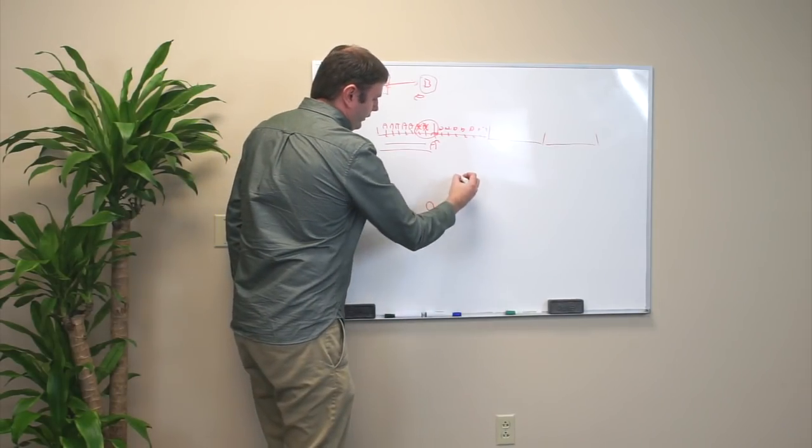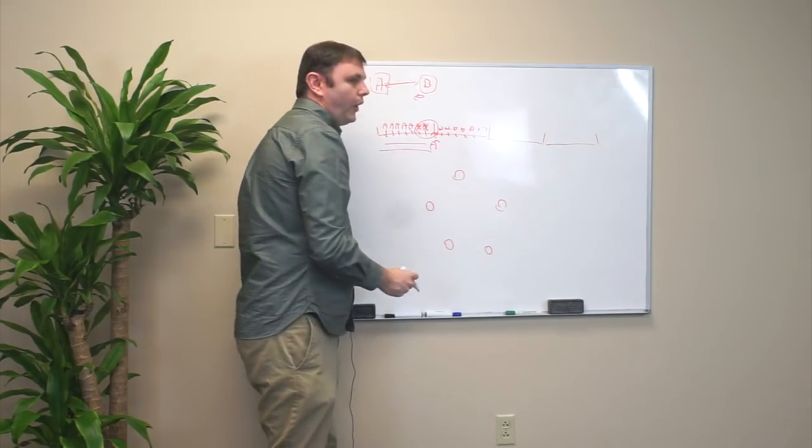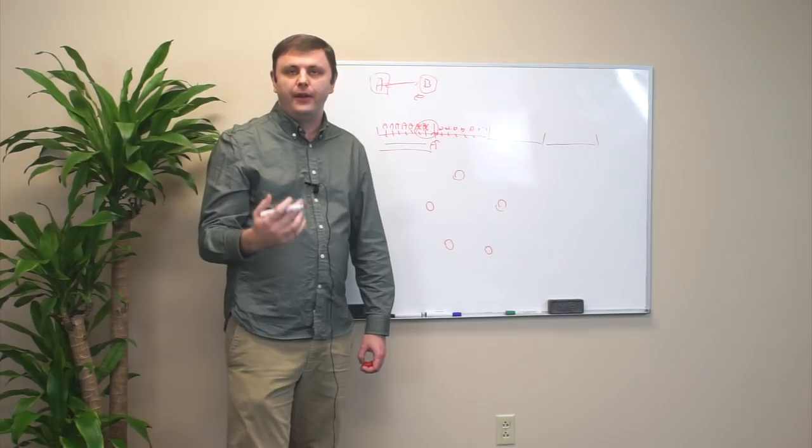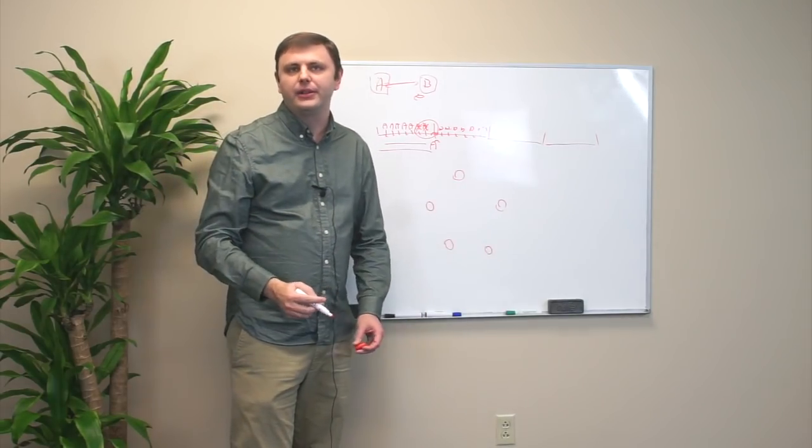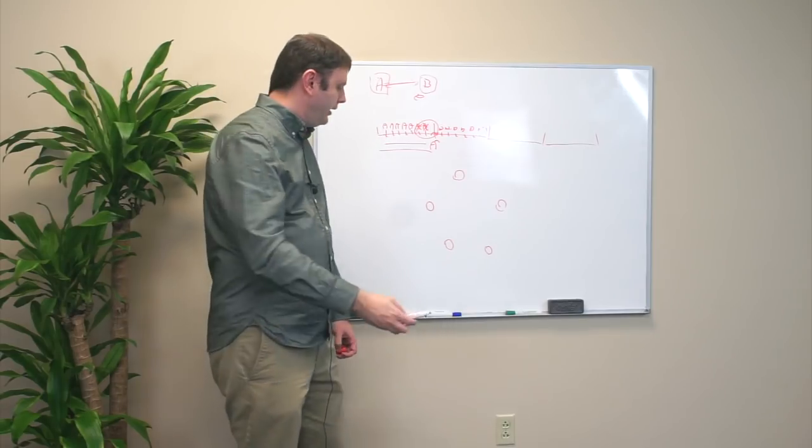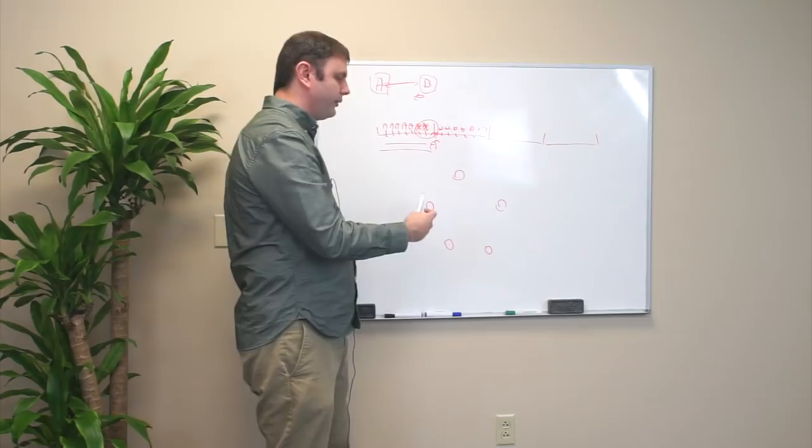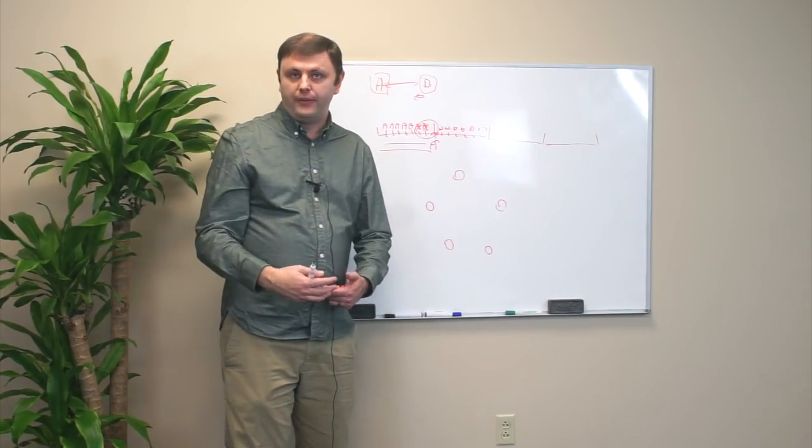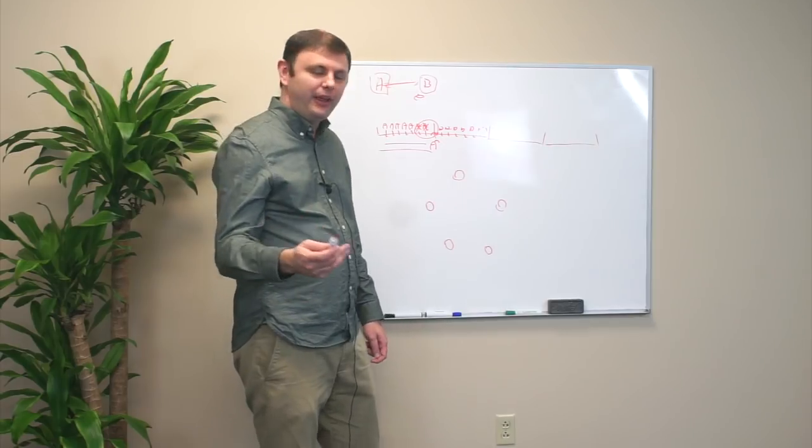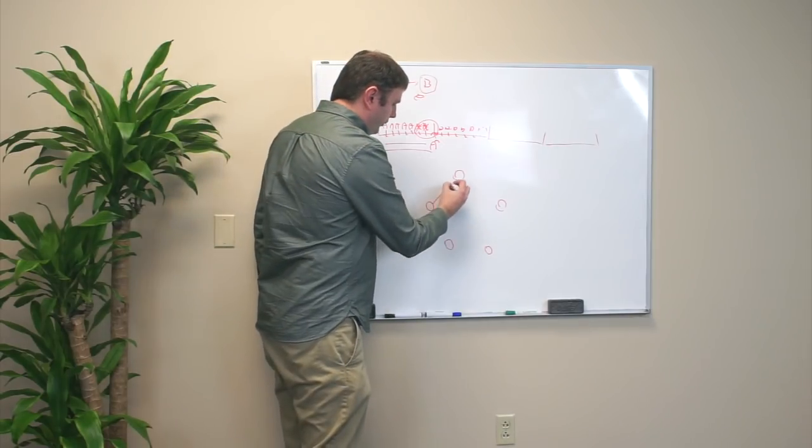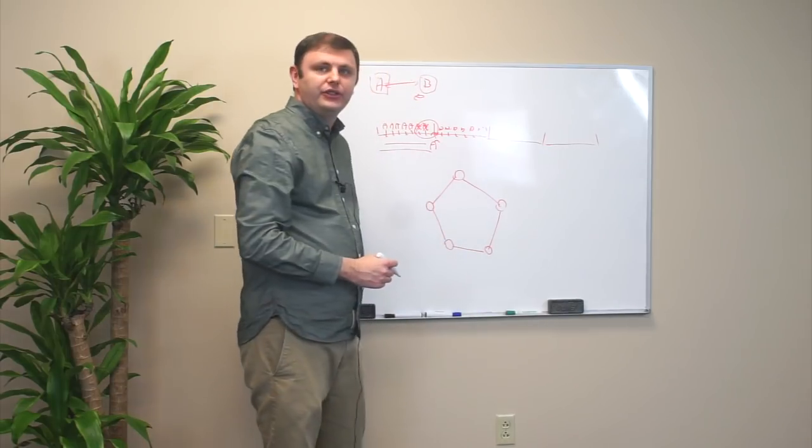The other thing we do on EOS is we recognize that these block producers are generally going to be very well known, like exchanges, universities, maybe small governments, elected individuals with high amounts of trust. So we don't really have to worry about them misbehaving overtly. And we know where they're located, we know who they are, so we can connect them with direct connections to each other.